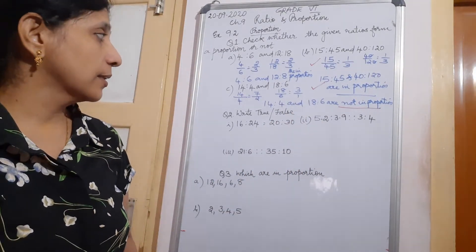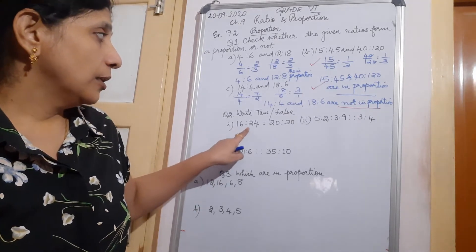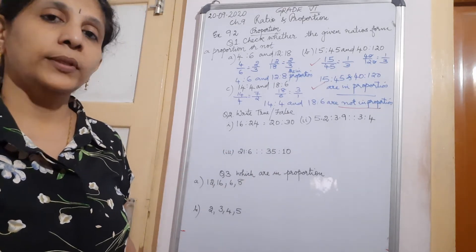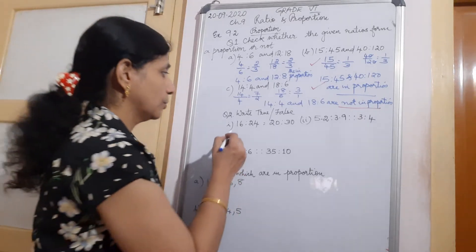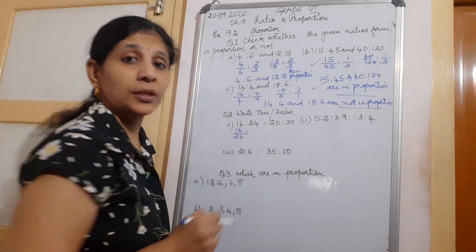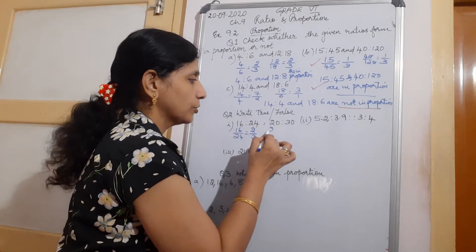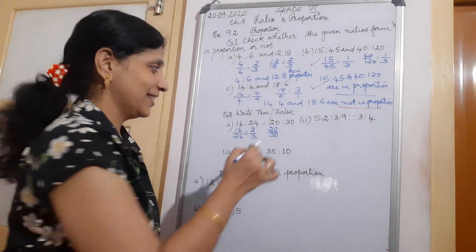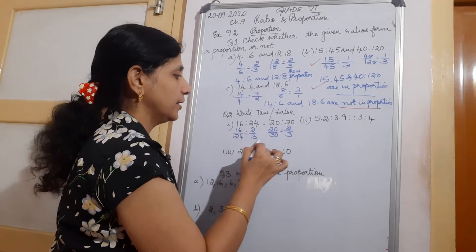Now the next one is: write true or false. 16 is to 24 equal to 20 is to 30. You have to find whether they are in proportion and write true or false. So 16 upon 24 — it is in the table of 8 — giving 2 by 3. And 20 upon 30 is also equal to 2 upon 3. So it is true.